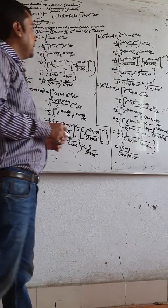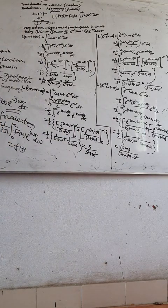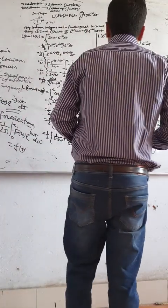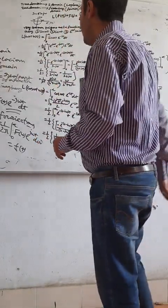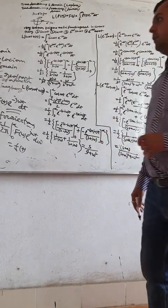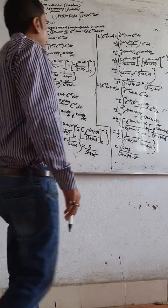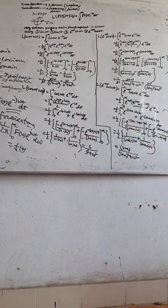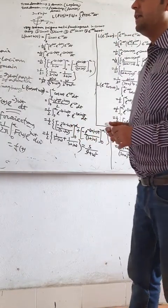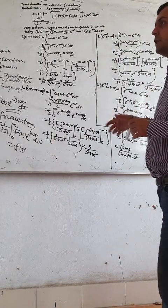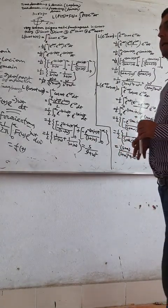In the next video we will learn more complex integrations: e to the power minus at times sine of omega t, and e to the power minus at times cosine of omega t. Also, what is u(t)? u(t) means the unit step function. We will also learn how to calculate the Laplace transform of the unit step function and the delta function in the upcoming classes.